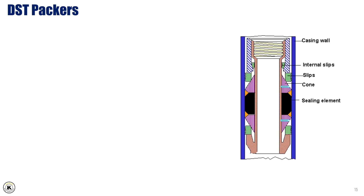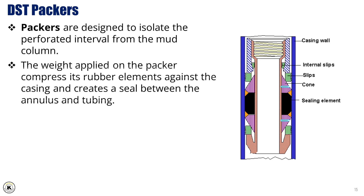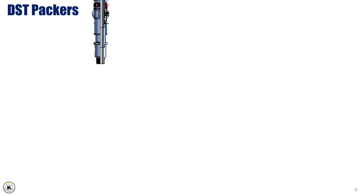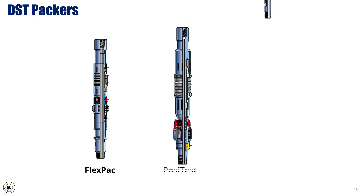DST packers are designed to isolate the perforated interval from the mud column. The weight applied on the packer compresses its rubber elements against the casing and creates a seal between the annulus and tubing. Three main types of packers are available in the industry, including the FlexPack Packer, Positus Packer, and Positrive Packer.